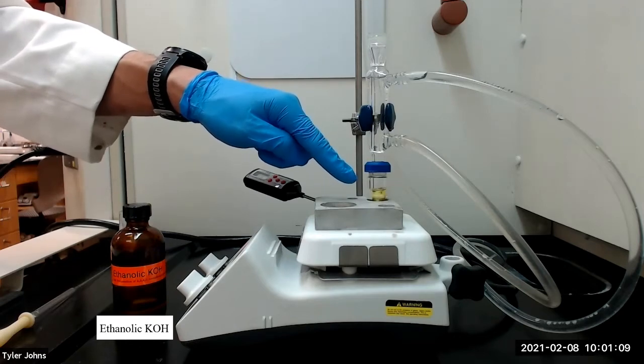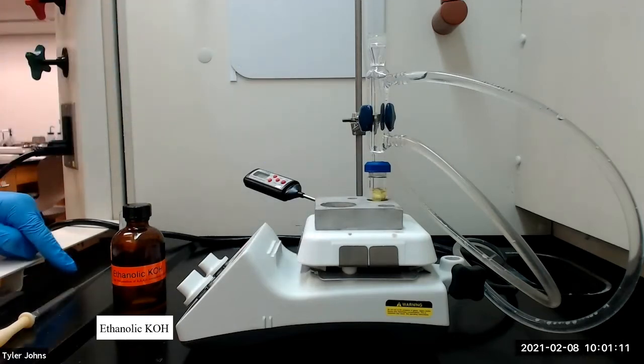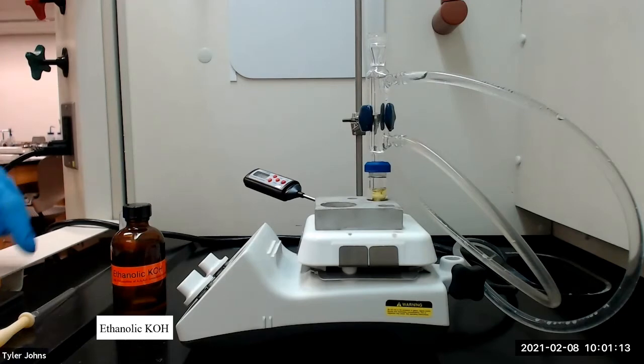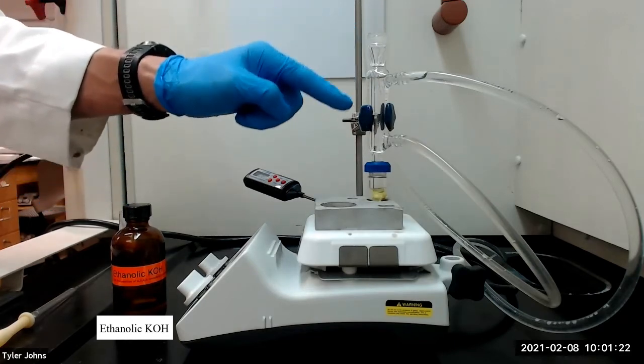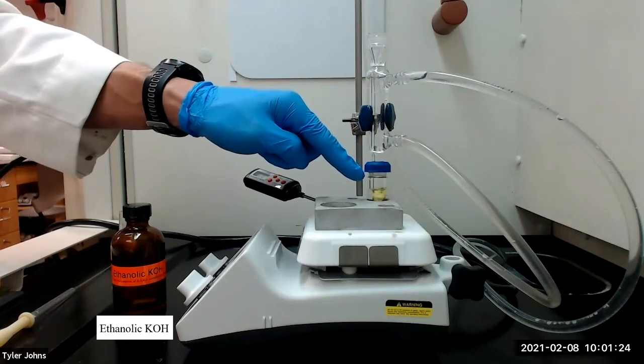Then with continuous stirring and using a 9-inch Pasteur pipette, we will carefully add dropwise 0.15 milliliters of ethanolic potassium hydroxide solution down through the water-cooled condenser into the vial.